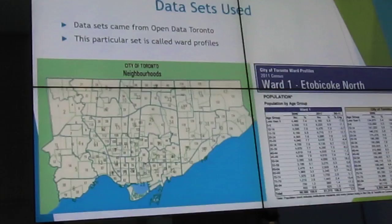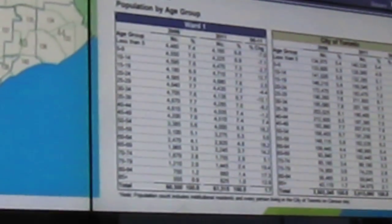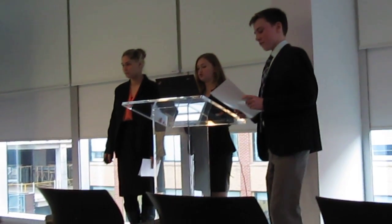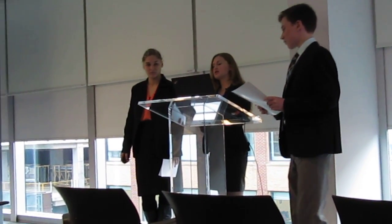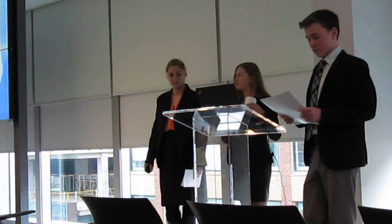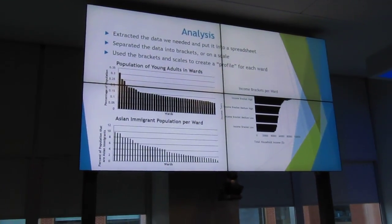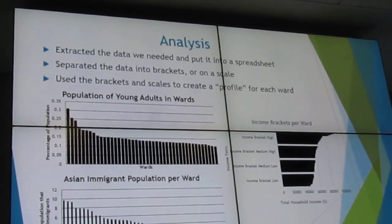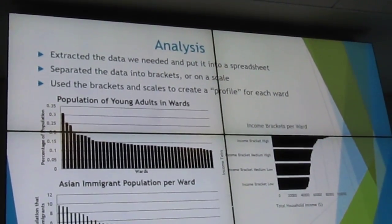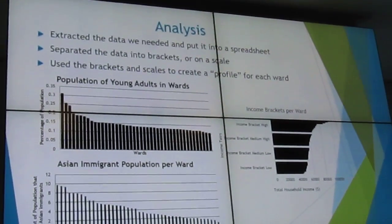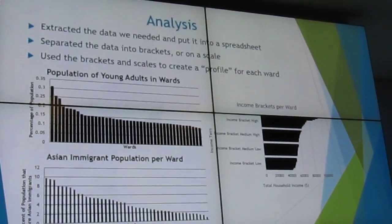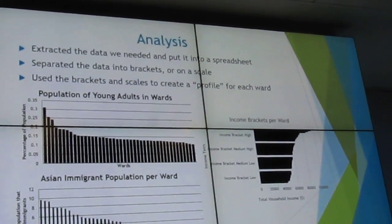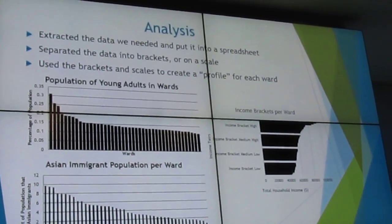On the right-hand side, there's a small excerpt from the data we used — the population by age group for ward number one, which is Etobicoke North. This is some of the data we used to create our program. Because there was such a large amount of data, for each individual ward we made a spreadsheet, which made it easier to look at all the data together. We separated that data onto a scale or bracket system. You can see the income bracket chart — we had high, medium-high, medium-low, and low-income brackets. There are also two charts showing the population of young adults and the Asian immigrant population, recreated for each individual ward, showing the population per ward as a percentage.